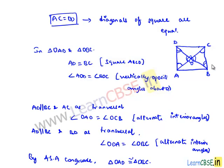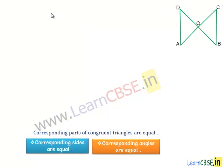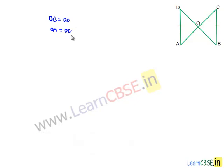When two triangles are congruent, their corresponding angles and corresponding sides will be equal. So here we can equate: OB is equal to OD and OA is equal to OC. As OB is equal to OD and OA is equal to OC, we can say AC and BD bisect each other.